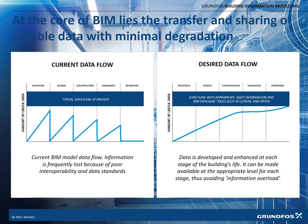These charts illustrate that by applying BIM technology, we move from a typical flow where information is accumulated in a building process and then we start over from scratch at handover. Whereas with BIM and the desired data flow, we have a gradual increase of information from inception to operation. Data is developed and enhanced at each stage of the building's life, and it can be made available at the appropriate level for each stage — thus we avoid information overload.